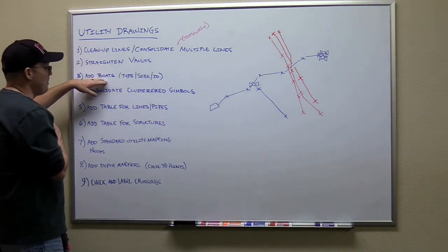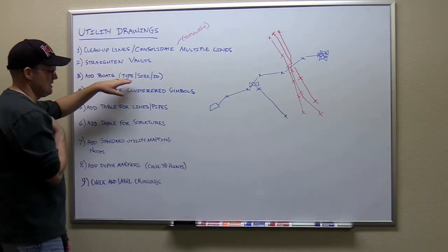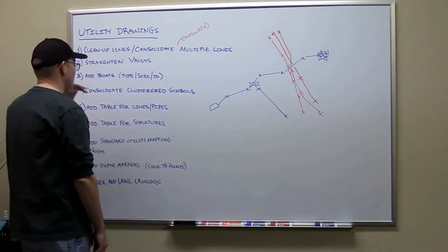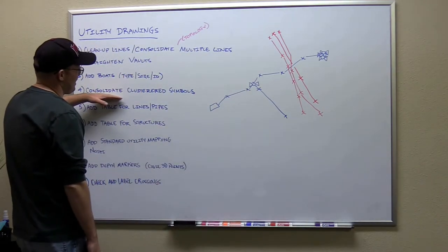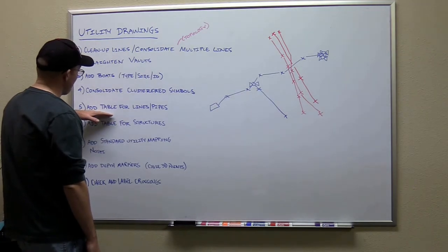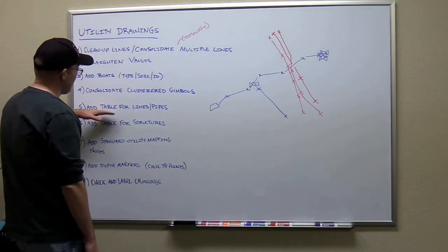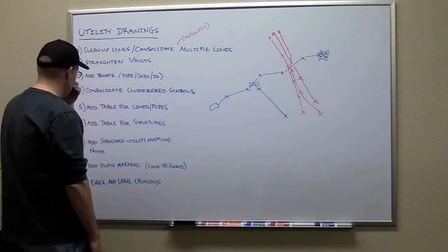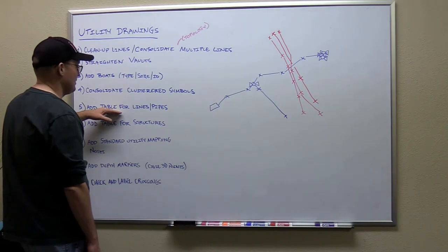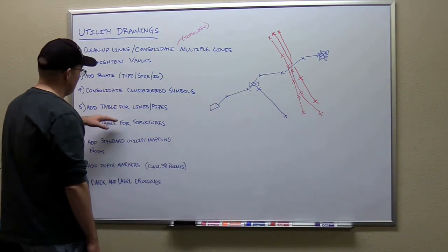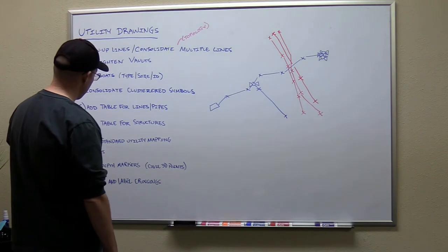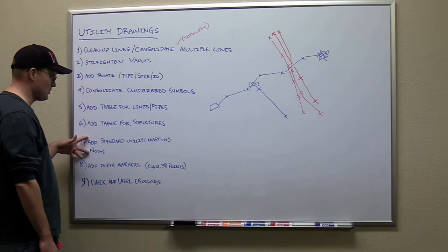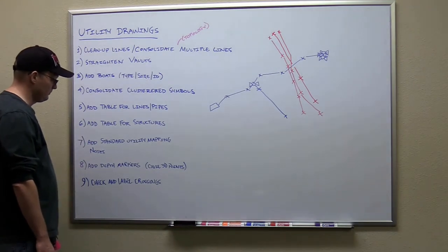You're going to have what we call the boats — those have a type, a size, and an ID. We'll add the boats, consolidate where we have clustered symbols, and we're going to add a table for the lines and pipes and a table for the structures. I need to set those up for you. When we get out of here, send me an email saying 'Landon, I need my tables for the utility drawings' so I remember to do that. We should have a standard set of utility mapping notes that go into each drawing.